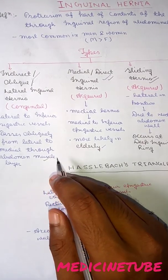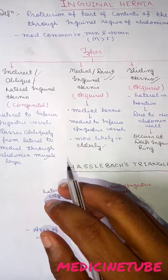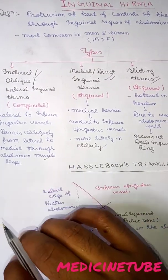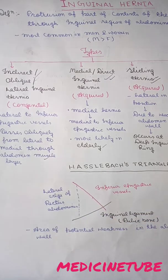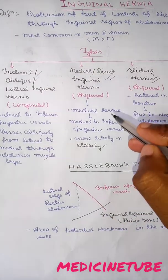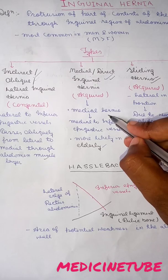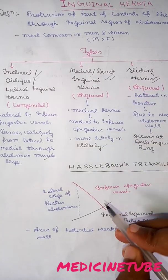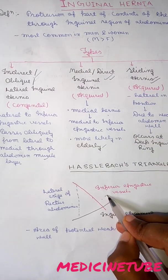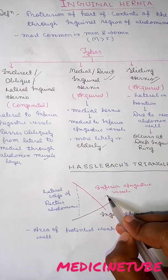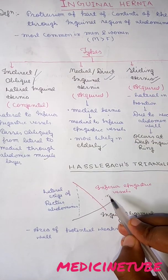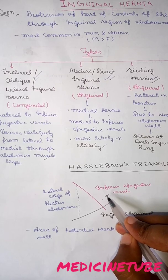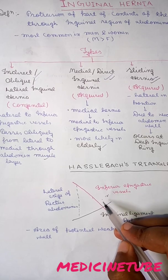That is why it is called oblique inguinal hernia. Next, direct inguinal hernia — it is medial or direct inguinal hernia. It is acquired and it is found medial to the inferior epigastric vessel, so it is called medial inguinal hernia.